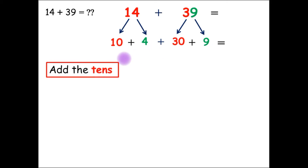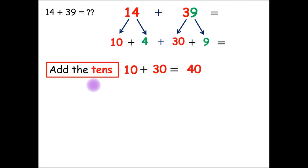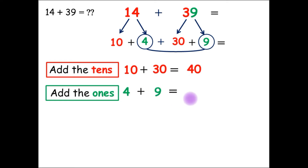First, we will add the tens. The tens are 10 and 30. So, 10 plus 30 equals 40. Then, we will add the ones. The ones are 4 and 9. So, 4 plus 9 equals 13.